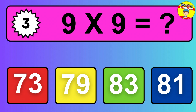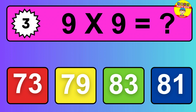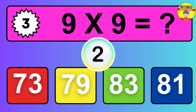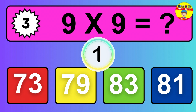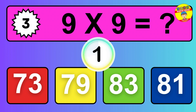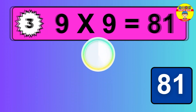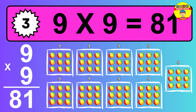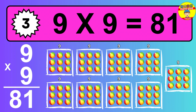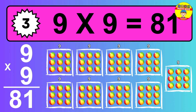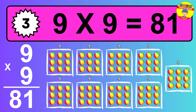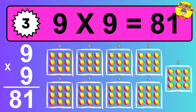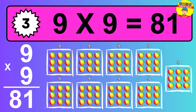Question 3. 9 times 9 equals what? So the answer is 9 times 9 is 81. To calculate, we have 9 groups with 9 balls each one. So how many balls do we have? 81 balls.